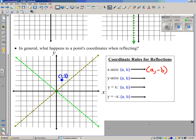The y-axis. 1, 2 becomes negative 1, 2. So AB becomes negative A, B.